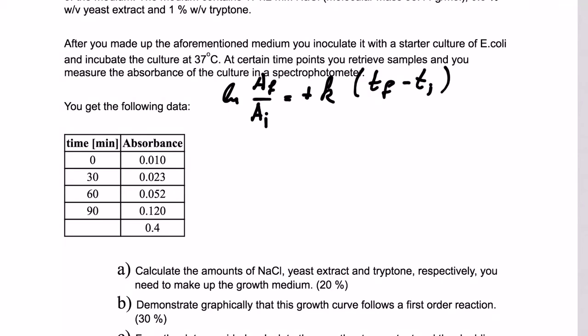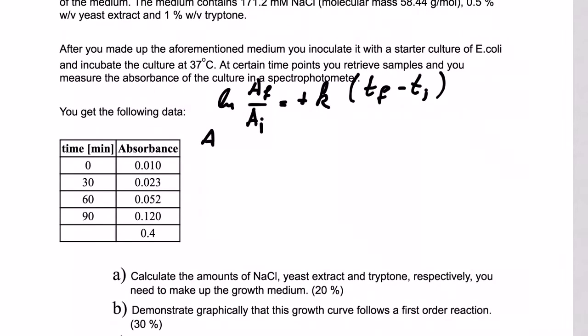And t final minus t initial. All we need to do is use some values for A final. Let's say we use this one here, equals 0.12, and the corresponding t final would be 90 minutes. And the A initial, let's say we take this one here, that would be 0.01, and the t initial would be 0 minutes. So all we need to do is plug that in and bring that to the other side here.